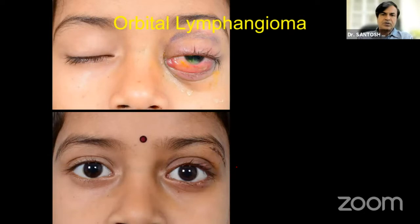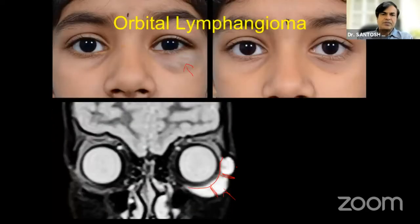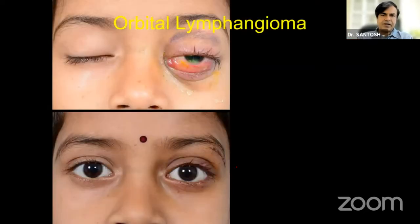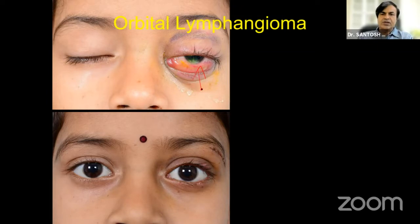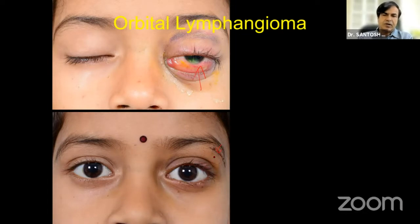Orbital lymphangioma does not always look benign. It can present with very dramatic features when it bleeds. This child had a small minor injury at school while playing and then came with dramatic presentation. Without any prior history of proptosis, you can't simply say what it would be. You have to complete the diagnosis by doing a good radiological evaluation. This child underwent an incisional biopsy during which we diagnosed a larger lesion with clotted blood within it — that proved to be orbital lymphangioma which had always been there but was so subtle that parents never noticed it until the child had massive bleeding.